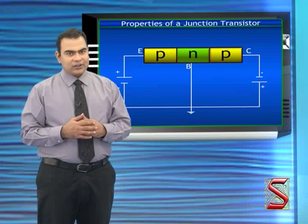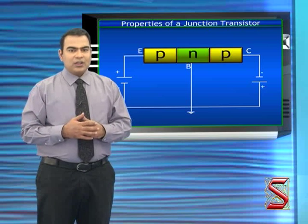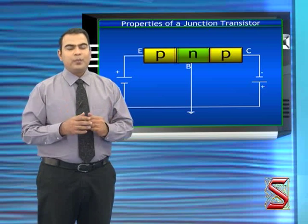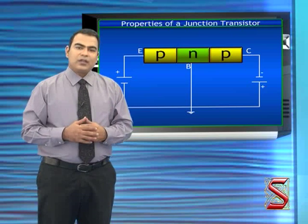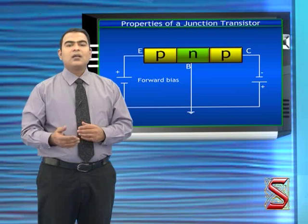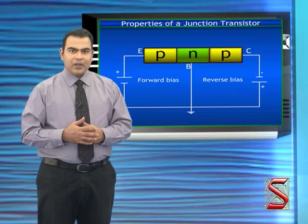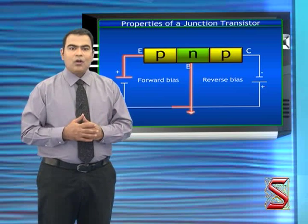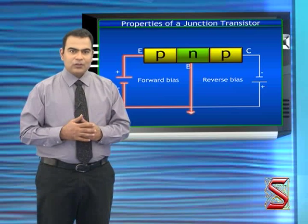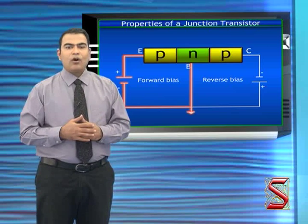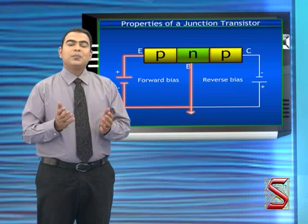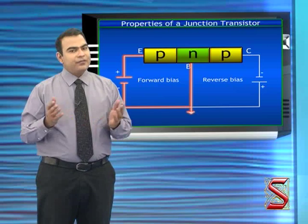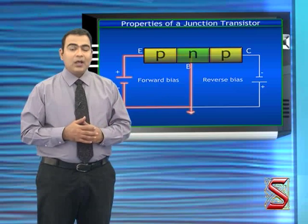Let us learn the properties of a junction transistor. A junction transistor has two p-n junctions. In a circuit, one junction of the transistor is forward biased and the other is reverse biased. The forward biased junction offers less resistance to the current flow. These properties of a junction transistor are used in various applications.